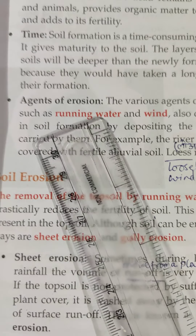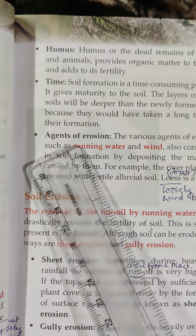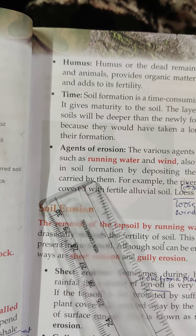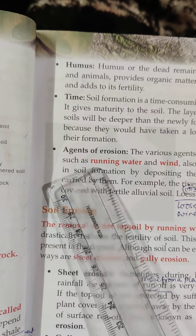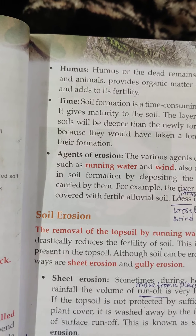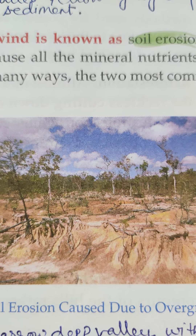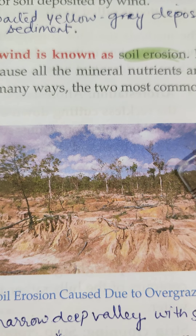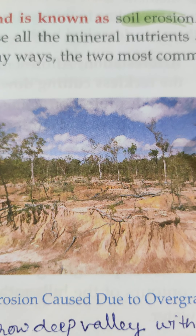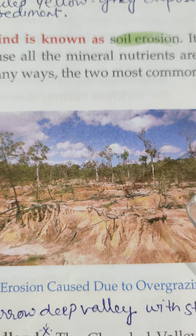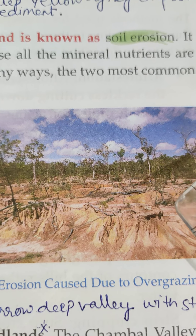Agents of erosion are the next factor. There are various agents of erosion such as running water and wind, which all contribute to the process of soil erosion. The removal of top soil by running water, wind, etc. is known as soil erosion.